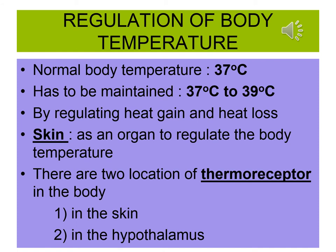The body will regulate body temperature by heat gain and heat loss. The skin acts as an organ to regulate body temperature. There are two locations of thermoreceptors in our body: in the skin and in the hypothalamus. Thermoreceptors are receptors that detect temperature.